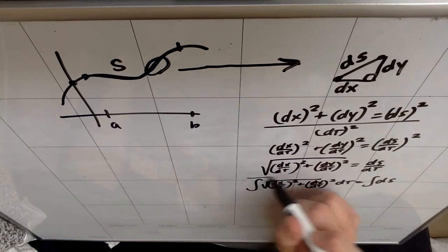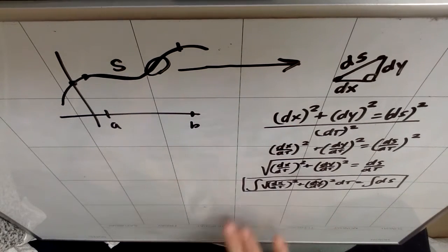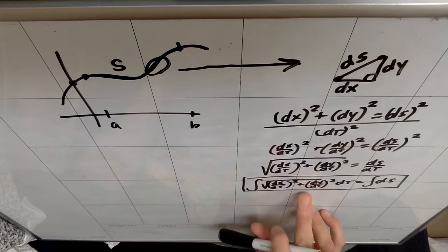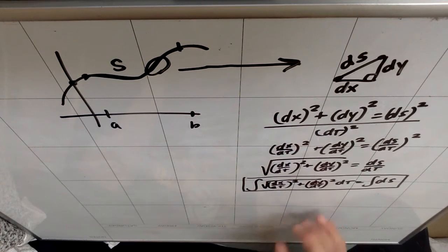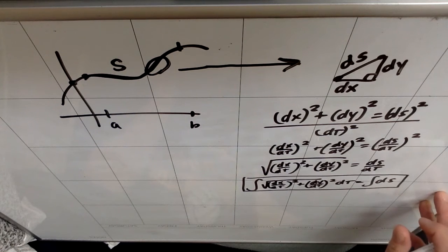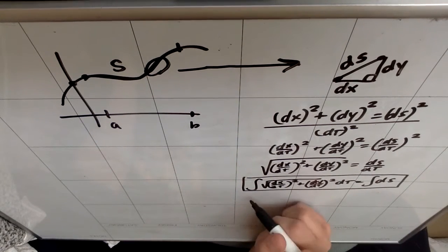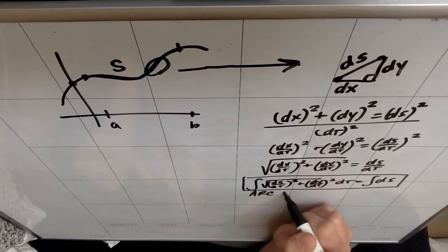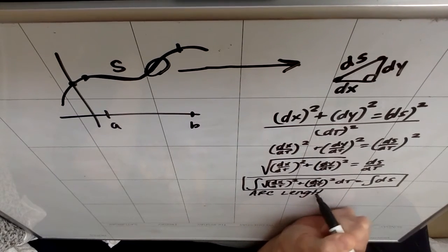My arc length in parametric is essentially the derivative with respect to x quantity squared plus the derivative with respect to y quantity squared all under a square root, and then we integrate it with respect to t. That gives me my arc length. This is our formula for arc length in parametric.